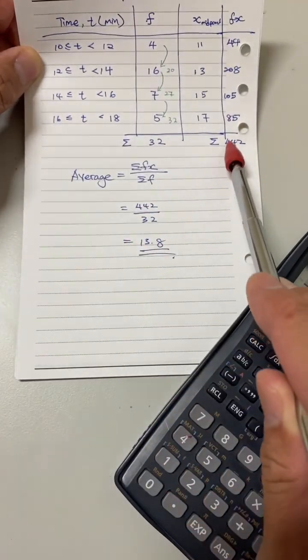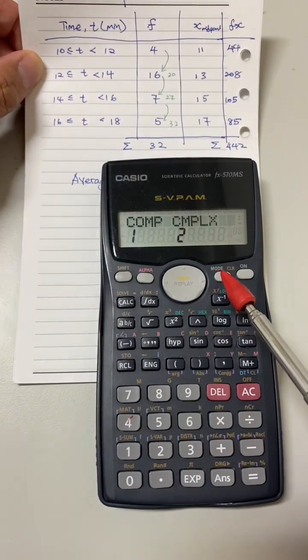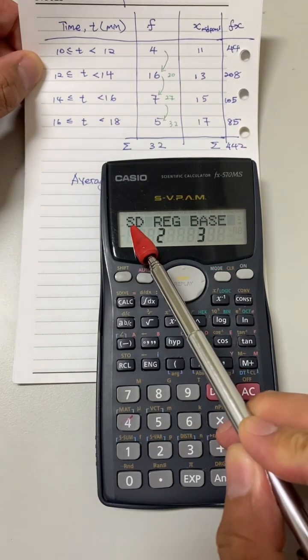In this video, I will show you how to use a scientific calculator to find out the average for grouped data. First, set your calculator to statistic mode.